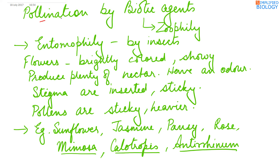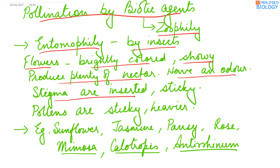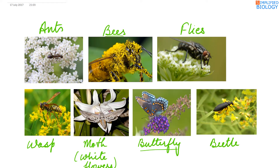Next is pollination by biotic agents, that is zoophily. First, entomophily — pollination by insects. Insects are the most widely used pollinators. In these plants, the flowers are brightly colored and showy to attract insects. They produce plenty of nectar as insects come to eat it, and they have a particular smell or odor. Stigmas are inserted deep into the flower and are sticky, while pollens are also sticky and heavier. Examples include sunflower, jasmine, pansy, rose, mimosa, Calotropis, and Crinum.